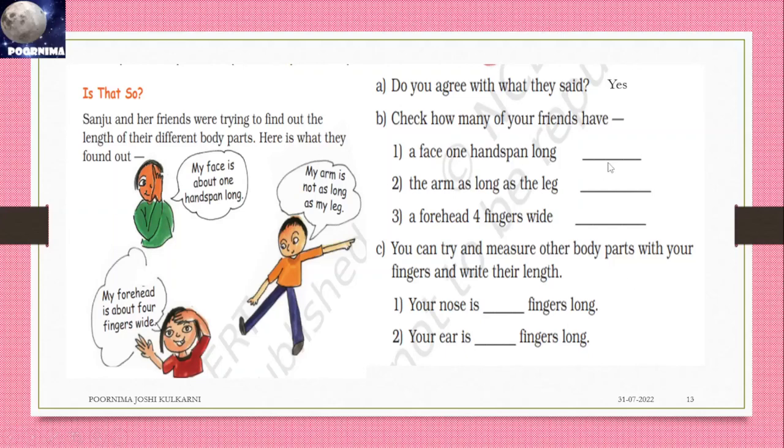Do you agree with what they said? Yes. How many of your friends have a face one hand span long? Five friends. The arm as long as the leg? No, zero. The forehead four fingers wide? Twenty. You can try: Measure the other body parts with your fingers and write their length. The nose is ___ fingers long: one. Your ear is ___ fingers long: one.